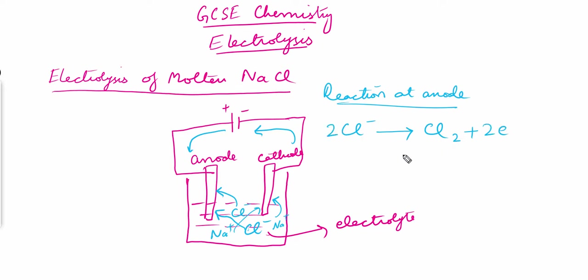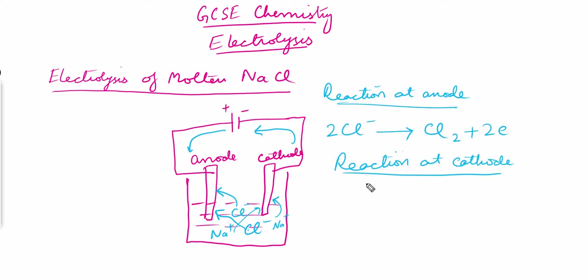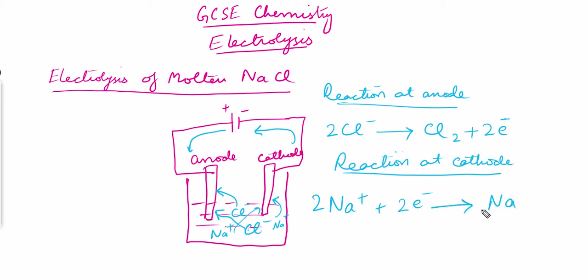At the cathode, the sodium ion moves towards it and accepts two electrons. Two sodium ions accept the two electrons and become sodium metal. So we get chlorine gas at the anode and sodium metal at the cathode. This is how we write the equations for the reactions at the cathode and anode.